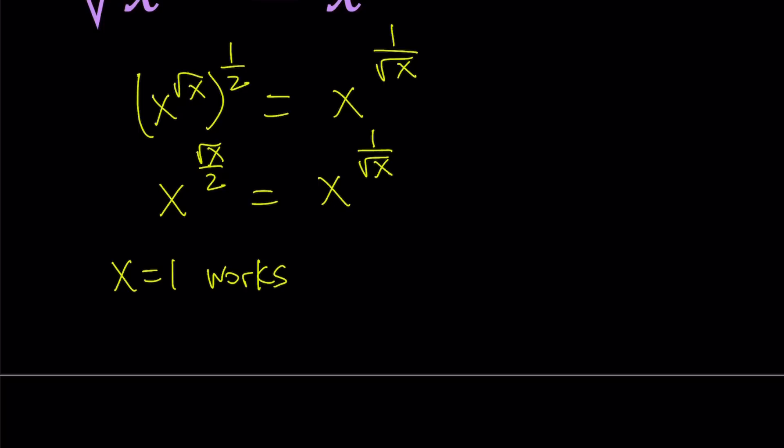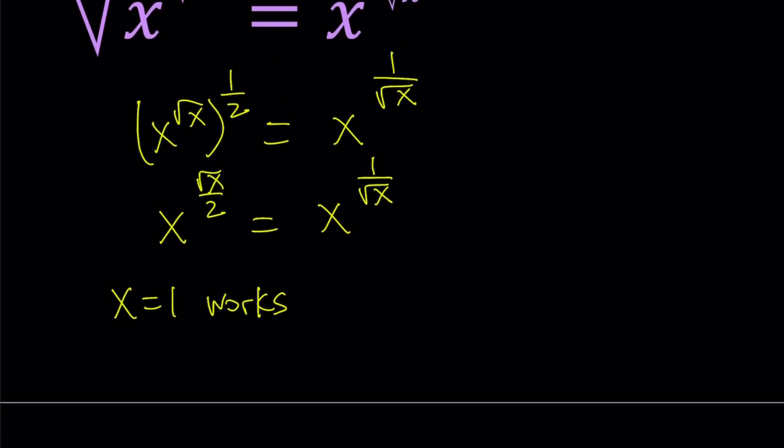Because when you have the same base, and if the bases are 1, then the exponents really don't matter much, as long as everything is well defined. So we also notice that x cannot equal 0 because it's going to make our expression undefined. We know that x cannot equal 0 and x equals 1 works.